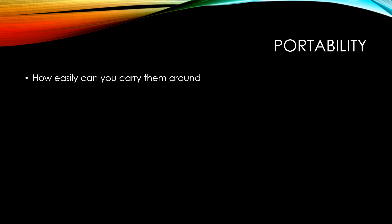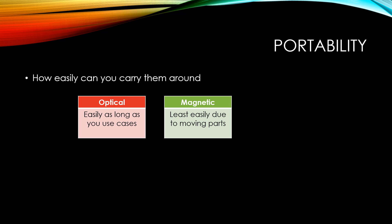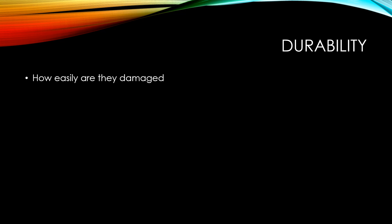Portability refers to how easily you can carry a particular storage medium around. Optical storage is easily carried as long as it is in its case — it's still quite lightweight. Magnetic storage is the least portable due to its moving parts making it sensitive to damage if moved around. Solid state storage is very portable — it's small with no moving parts and very lightweight. Recent improvements in magnetic storage technology mean that it is now smaller, lighter, and more durable, and commonly used in portable hard disk drives that connect via USB. However, it is still the least portable of the options.